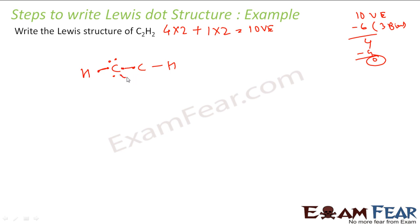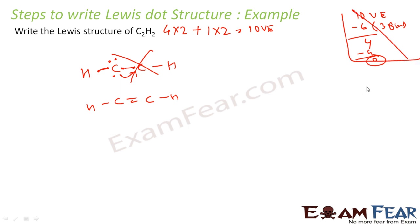So this carbon said: okay, I will give 1 electron to you and I will form a double bond. So let us start with the new structure. We have 10 valence electrons. In the bonding now, we need 8 electrons because we have 4 bonds. So 8 electrons are needed for 4 bonds.